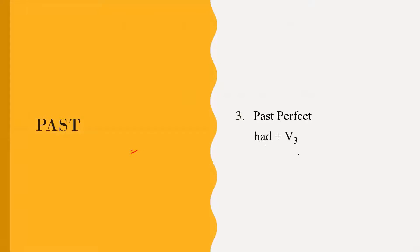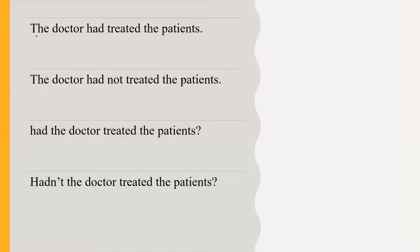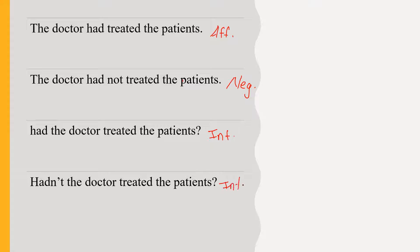Third, past perfect. Formation: 'had' plus third form of the verb. Example: 'The doctor had treated the patients.' This is an affirmative sentence. 'The doctor had not treated the patients.' This is a negative sentence. 'Hadn't the doctor treated the patients?' is an interrogative negative sentence. Here 'hadn't' is the short form of 'had not'.